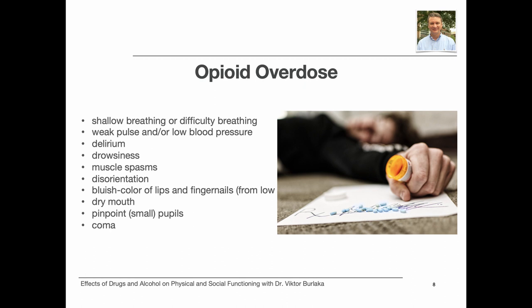The symptoms of overdose include drowsiness, disorientation, dry mouth, and coma. Opioid overdose might be reversed by administering naloxone. As an opioid antagonist, naloxone binds to opioid receptors in the body and blocks the opioid's effects. The amount of opioid reversal drug needed depends on the dose and strength of the opioid involved in the overdose event.